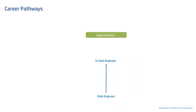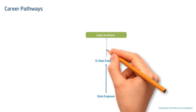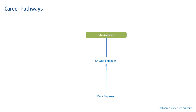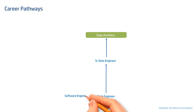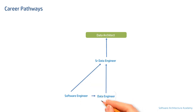A most likely career path starts with the data engineer, followed by a senior data engineer — this may or may not encompass big data. When we talk about data architect, there are various focus areas like data warehouse, big data, etc., but the foundation being discussed here is data engineering. A software engineer expert in Java, Python, or any object-oriented programming language can also become a data architect, by first becoming a data engineer if junior.